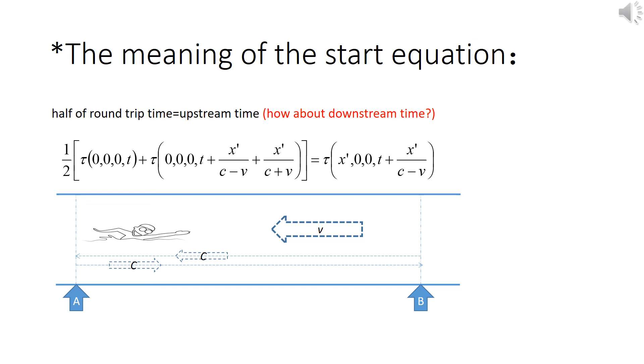Here, the c minus v is the relative speed when light is chasing after a reference frame, and the c plus v is the relative speed when light and the reference frame are separating.